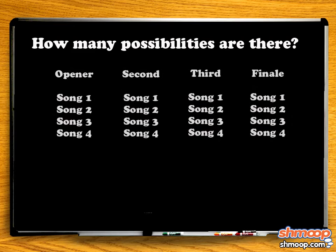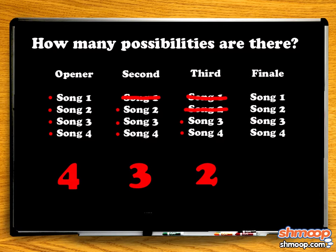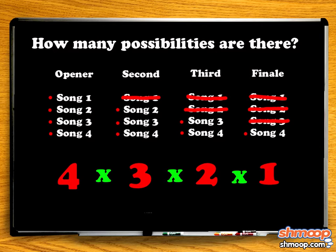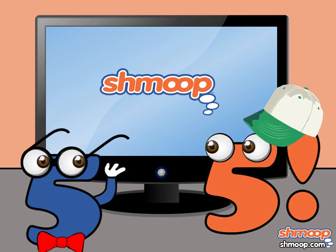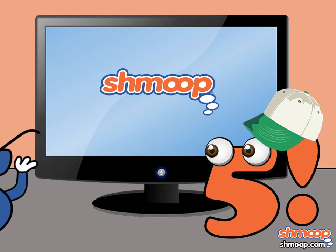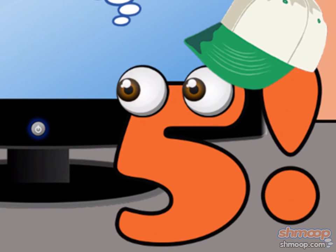How many possibilities are there? Well, there are four options for their opener. Once their first song has been determined, there are only three options for their second song, then only two options for their third, and lastly a single option left for their big finale. There are 4 times 3 times 2 times 1, or 24 possible orders for the band's set list. Make sense? Sure, but what if the audience wants an encore? I don't think they're ready for that kind of math. Good call. We're here to see Troll Slayer.